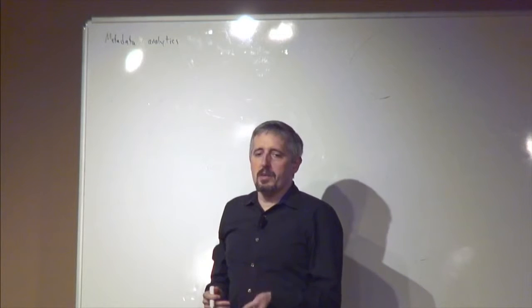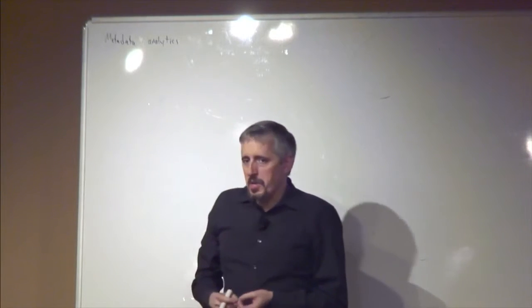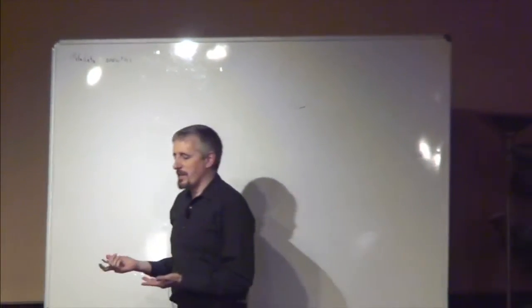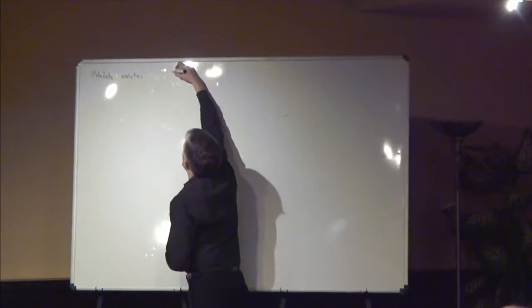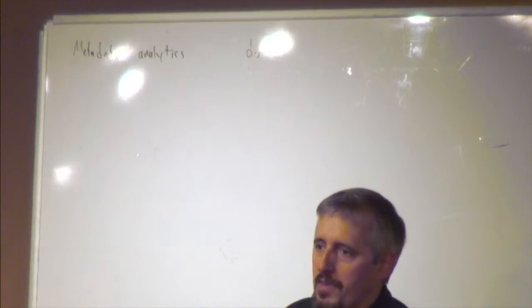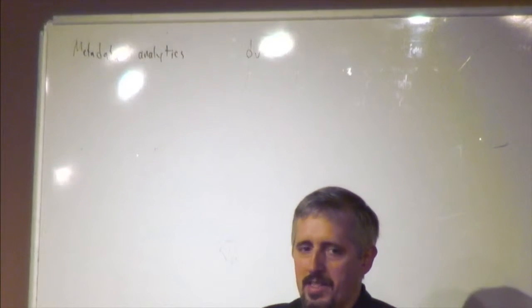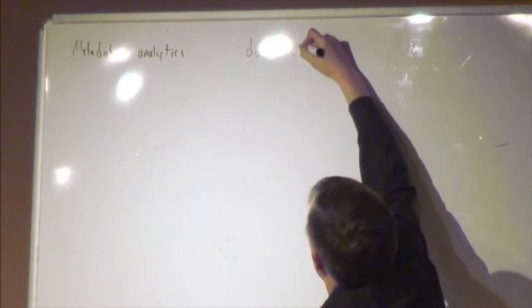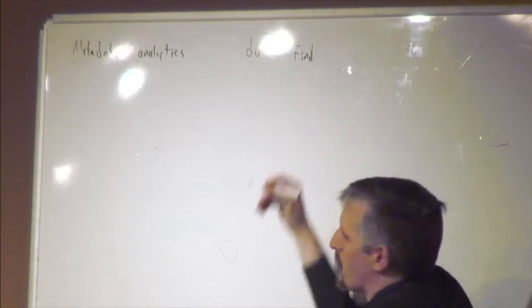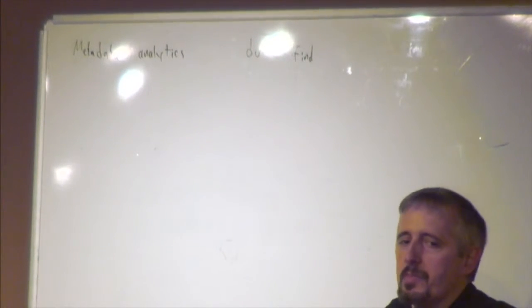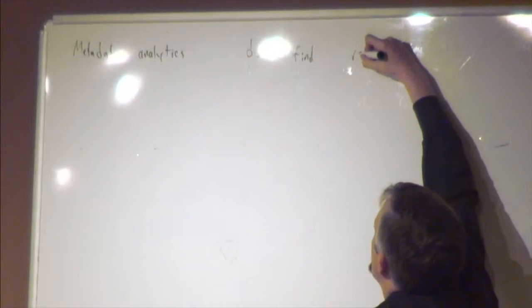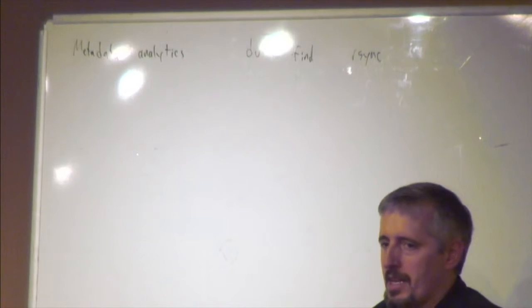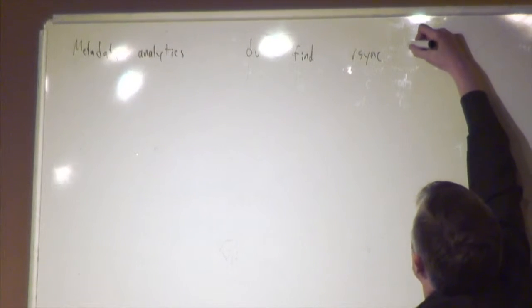This is really about answering questions about your data. When you want to find out how much space is used by a particular directory, you'd run du. If you want to find all the files that have changed in the last hour, there's a find command. This could be rsync, which periodically goes through and finds newer files to replicate, or backup catalog as Pete was mentioning earlier.